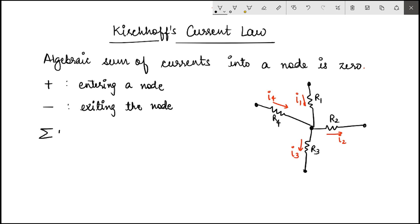If the algebraic sum of currents into a node is to be zero, this implies that considering the direction of currents, the summation should be zero. So I1 is flowing into the node — we take a plus reference — so we write I1. I2 is exiting the node, so minus I2. I3 is also exiting the node, so minus I3. I4 is entering the node, so plus I4. This is equal to zero.